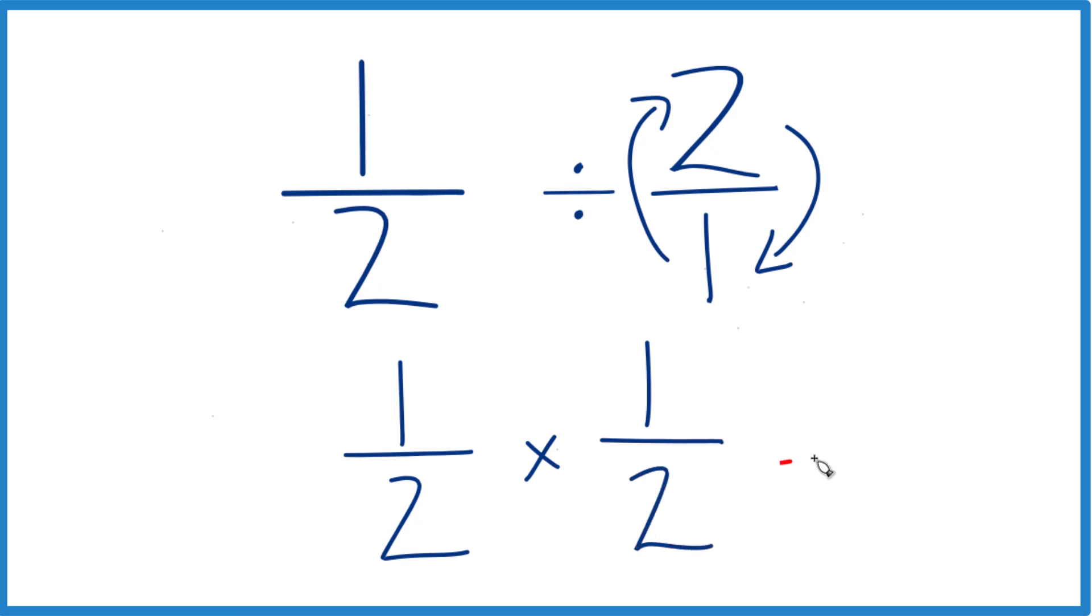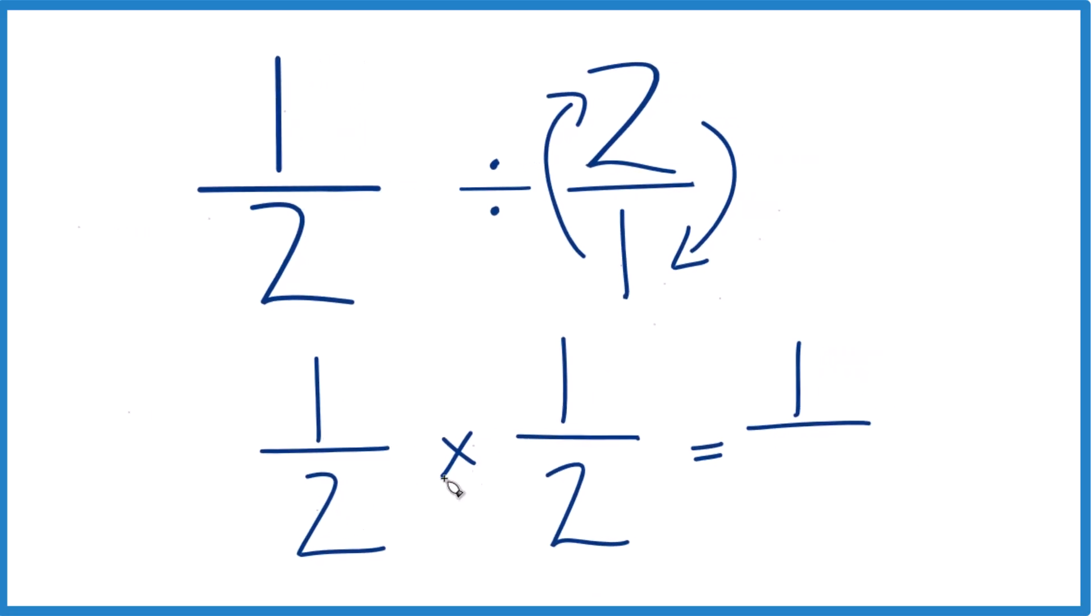This makes it a lot easier because with fractions, when we multiply, we multiply the numerators. So one times one, that's one, and then we multiply the denominators. Two times two, that's four.